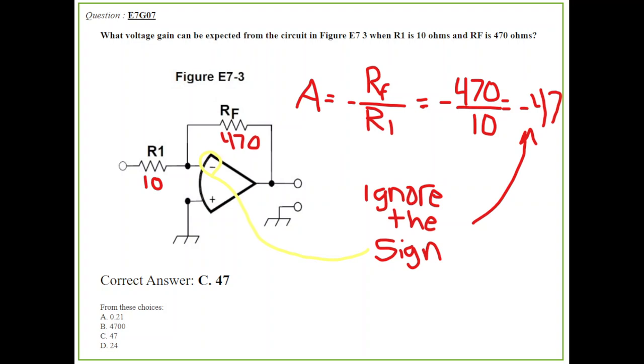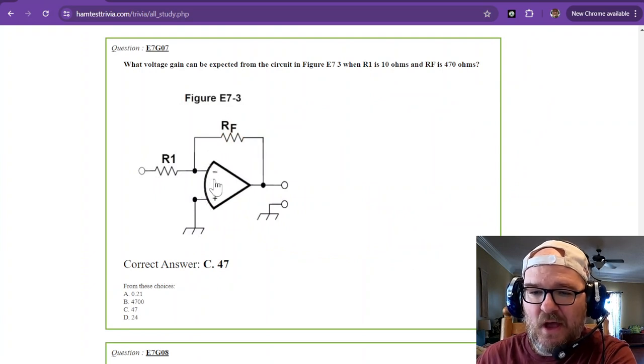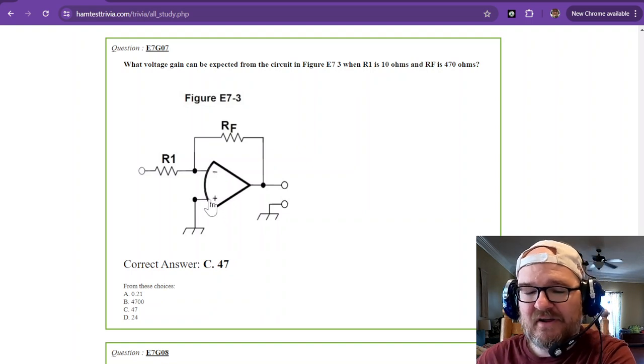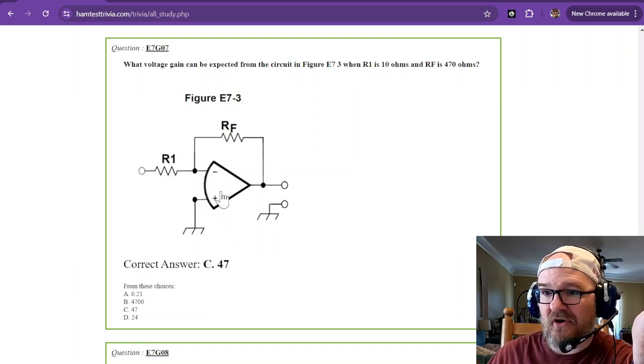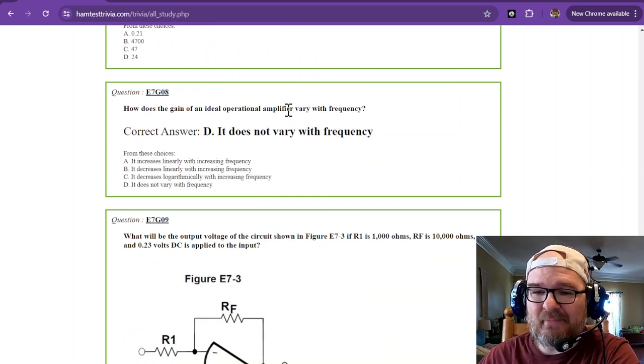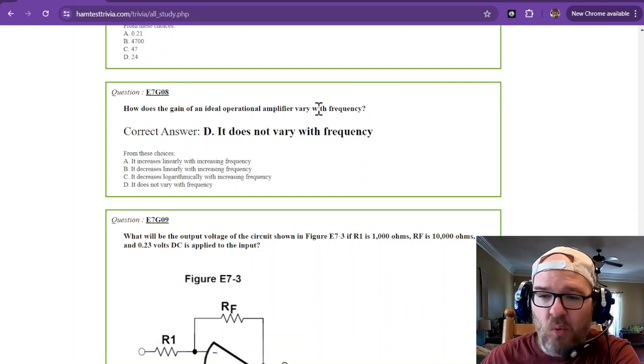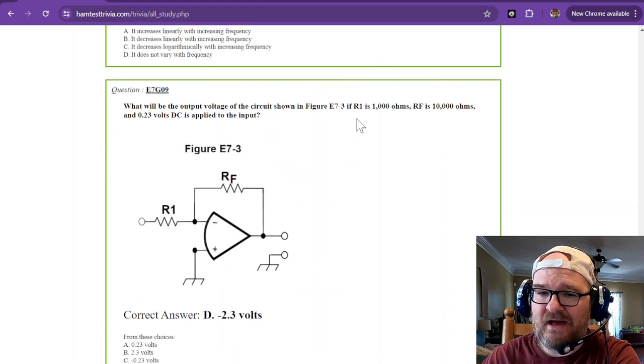You can memorize the answers to this, or you can just roll with it. Ignore the sign. This is the sign right here. There is a non-inverting topology for this. But what's interesting is they don't put it on the test at all, which is great. One less thing to remember. How does the gain of an ideal operational amplifier vary with frequency? Ideally, you do not want it to vary with frequency. It's not an ideal world. But it does not vary with the frequency.